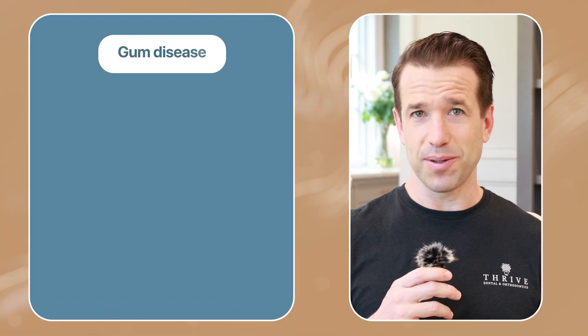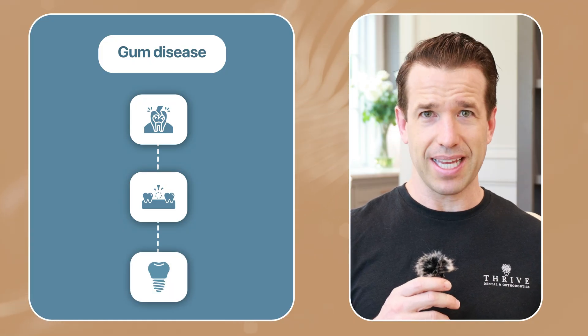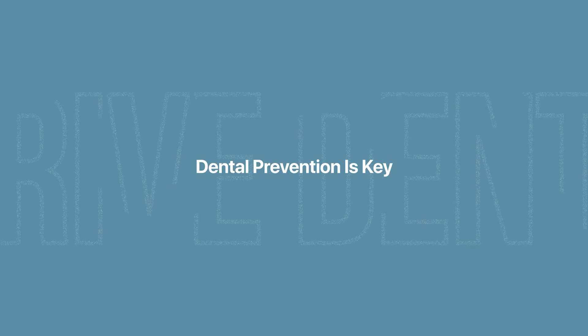Gum disease is the silent killer of your mouth. Gum disease leads to bone loss. Bone loss leads to tooth loss. Tooth loss means you have to do something like implants or dentures to replace those missing teeth. Once again, that's why dental prevention is key.